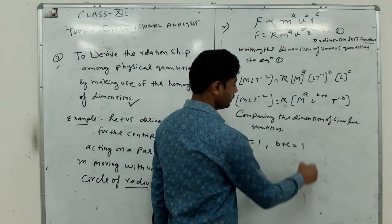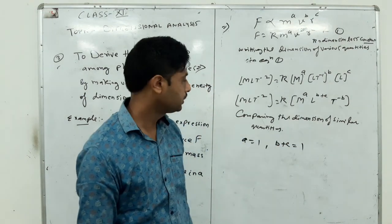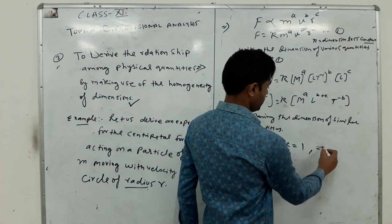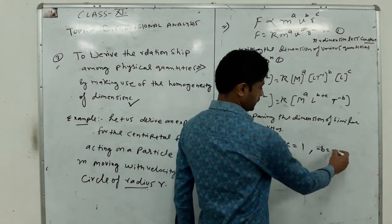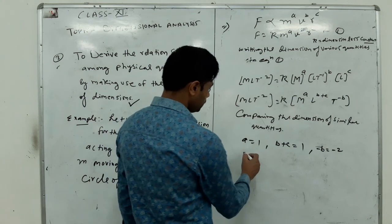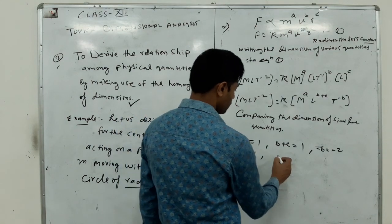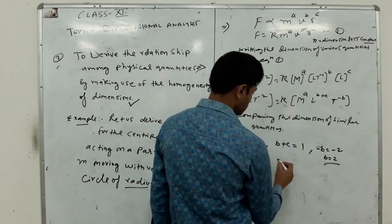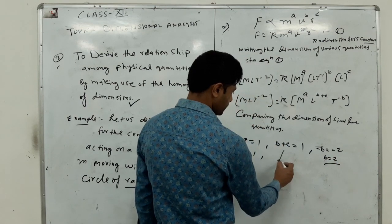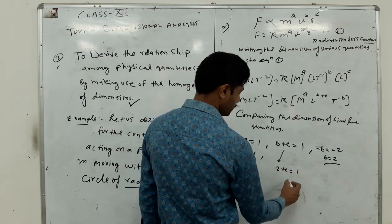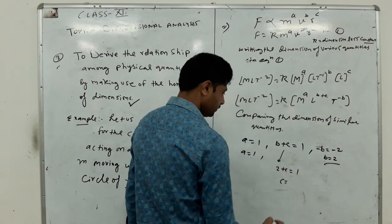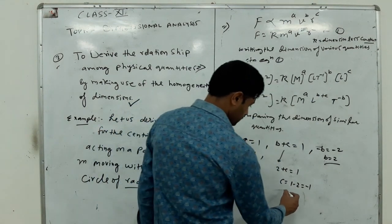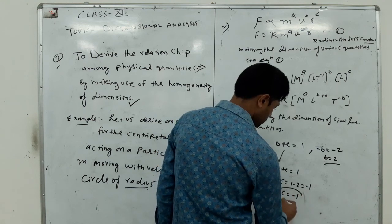B plus C equals 1, and -B equals -2. It means A equals 1 and B equals 2. So putting this value, 2 plus C equals 1, so C equals 1 minus 2 equals -1.